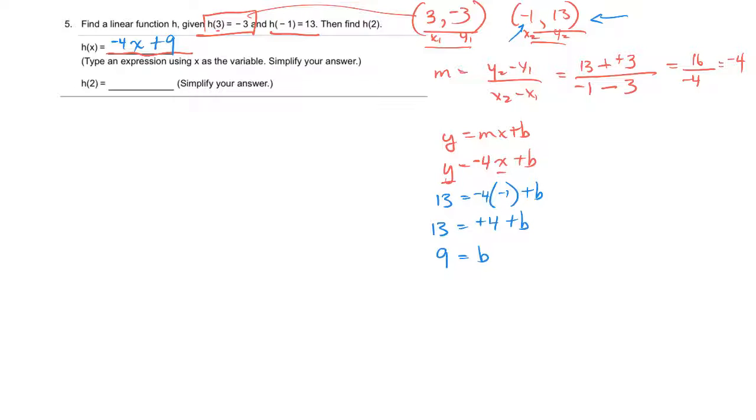Then they ask a follow-up question. They say, well, what's h of 2? So what they're saying is plug a 2 in everywhere you see an x. So negative 4 times 2 plus 9. That would be negative 8 plus 9, and negative 8 plus 9 is equal to a positive 1. So the value of the function called h, when you plug a 2 in for x, is equal to 1.